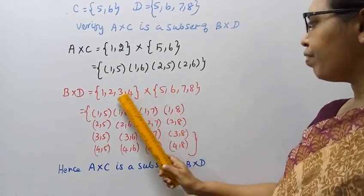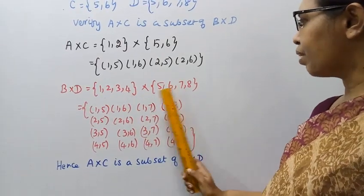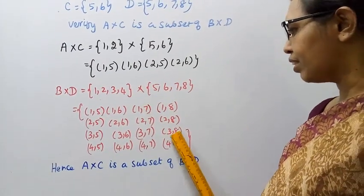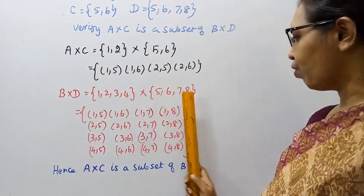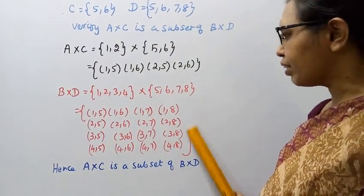Continuing: 3,5, 3,6, 3,7, 3,8, and then 4,5, 4,6, 4,7, 4,8. This gives us B cross D.